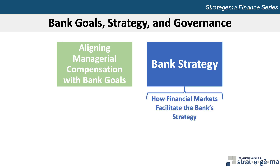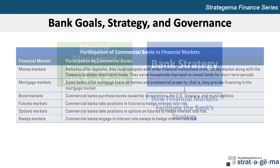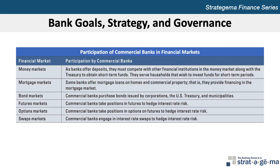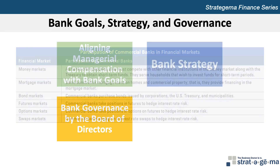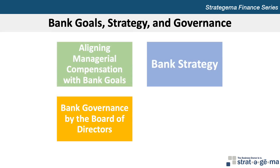To implement their strategy, banks commonly rely on the financial markets, as shown in this exhibit. They rely on the money markets to obtain funds, on the mortgage and bond markets to use some of their funds, and on the futures, options, and swaps markets to hedge their risk.